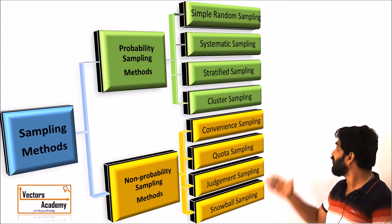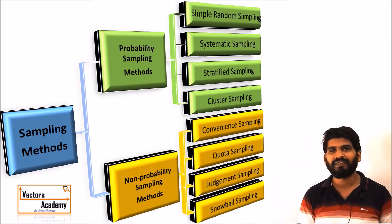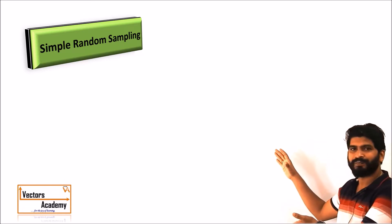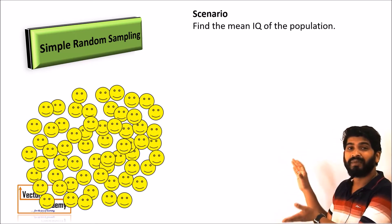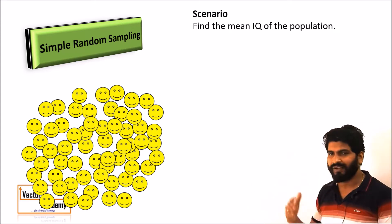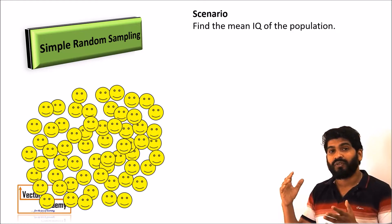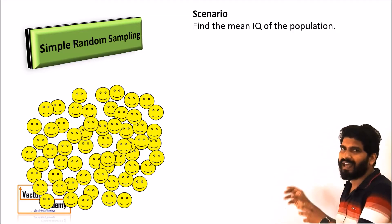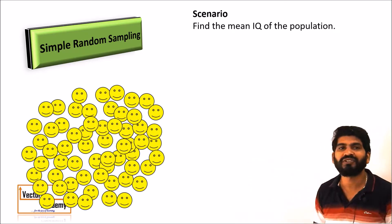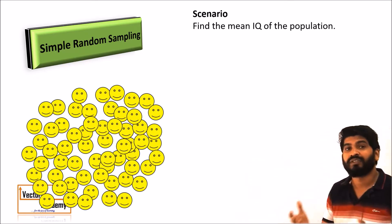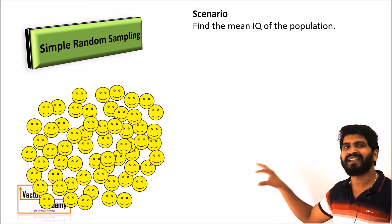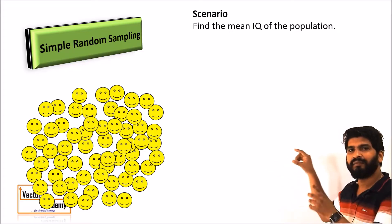Let us start with the first method: simple random sampling. Consider a population where we need to find the mean IQ level. With limited resources and time, we select a sample, study their IQ level, and assume the population has the same level. In simple random sampling, we randomly select an element and make a study on it.